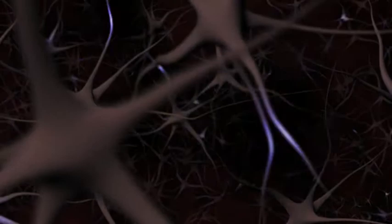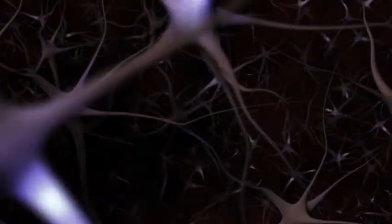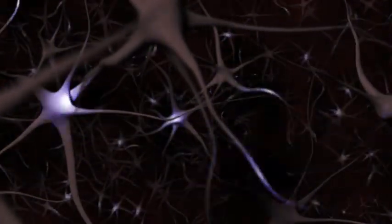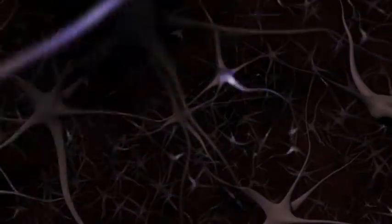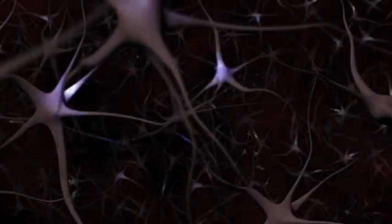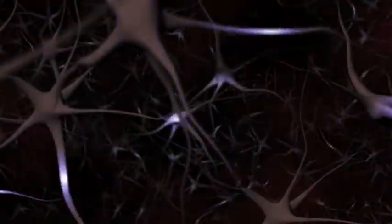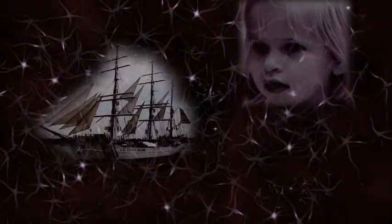Each neuron is connected to as many as a thousand of its neighbors. These trillions of connections provide the playing field upon which the complex activity of the brain takes place. Each neuron can turn its neighbors on or off depending on the signal it sends, and the resulting stable patterns of neuron firing represent memories, images, and thoughts.